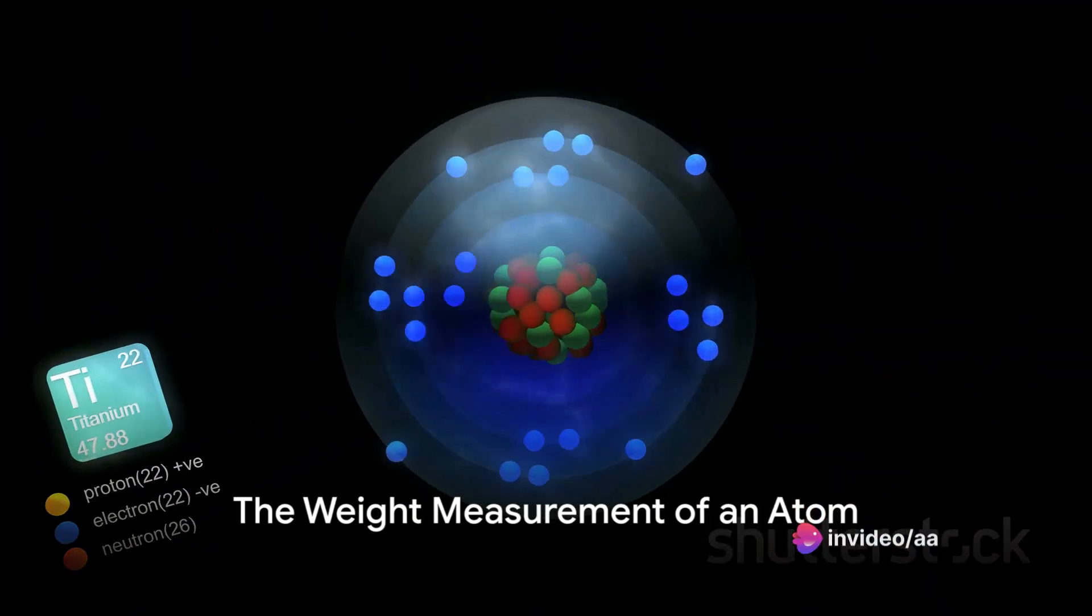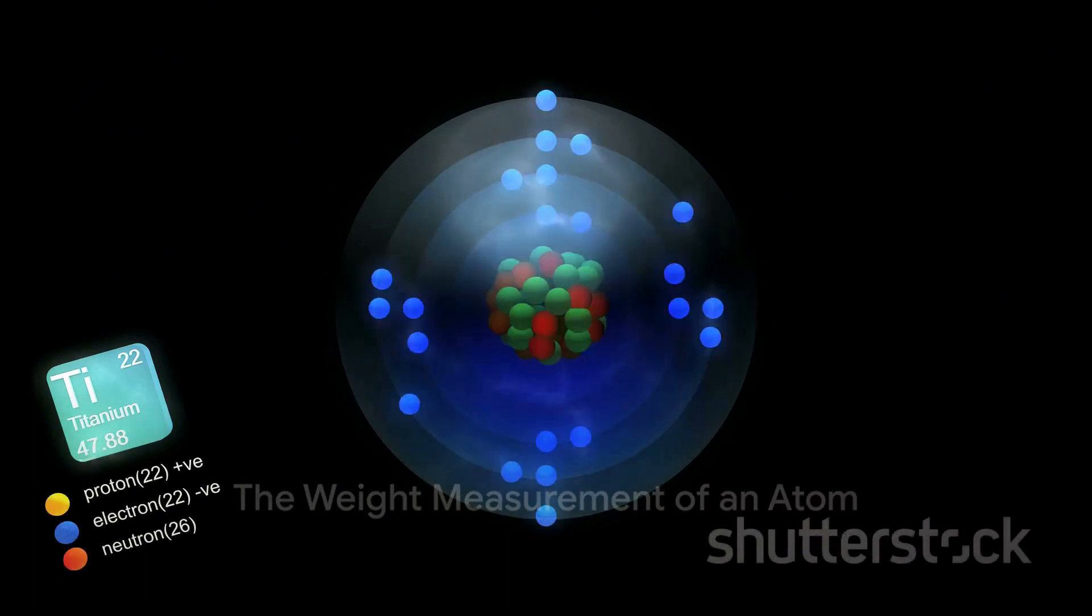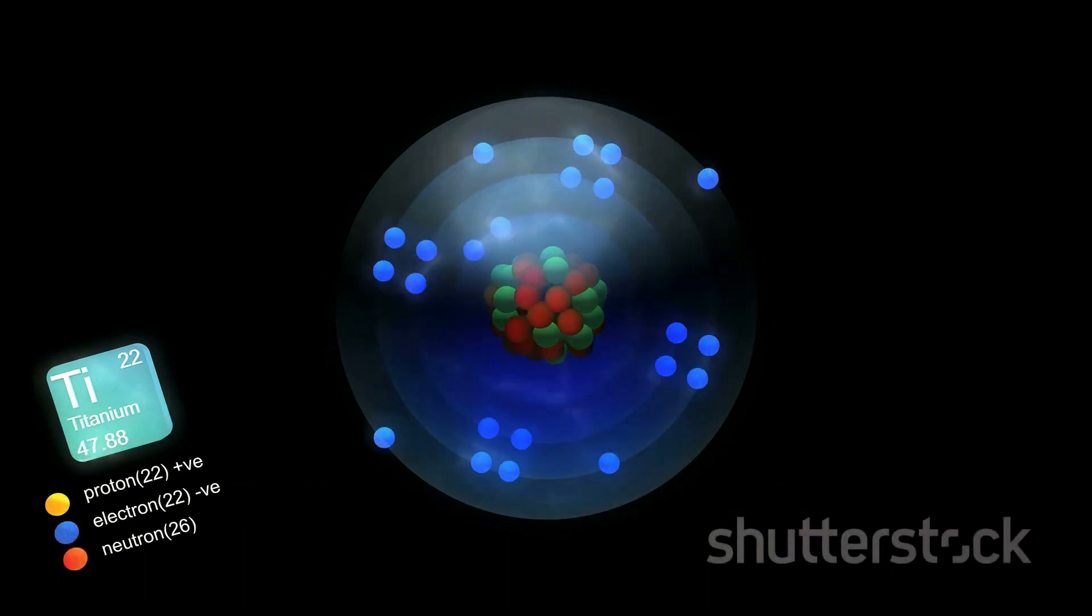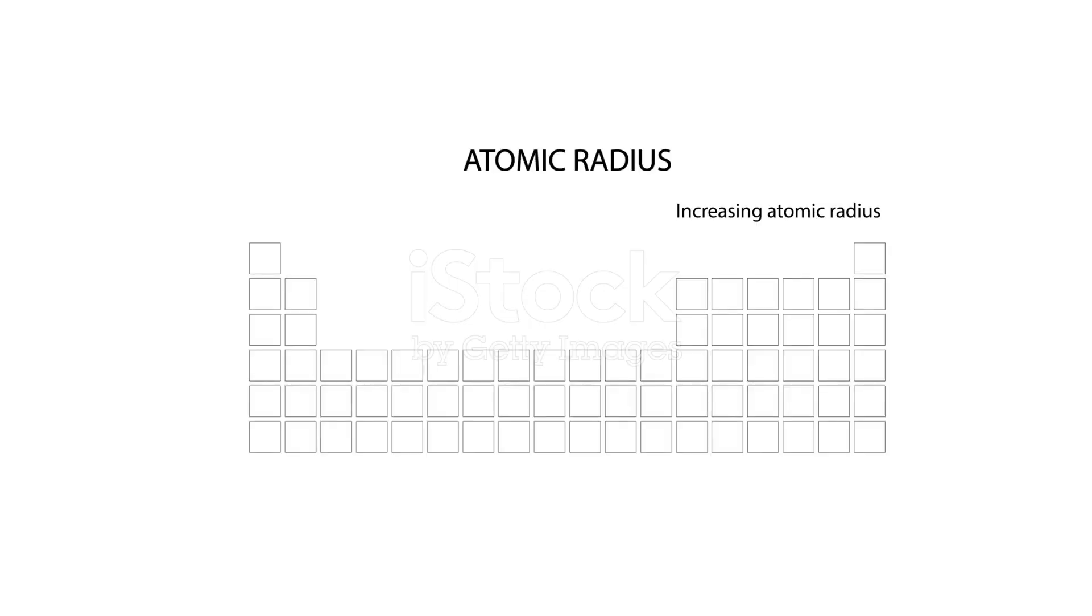Think of the atomic mass as the weight measurement of an atom. It's like standing on a scale but for an atom. But instead of pounds or kilos, atomic mass is measured in atomic mass units.